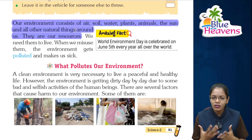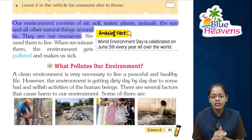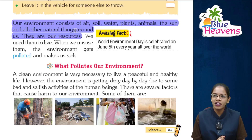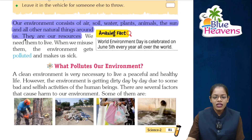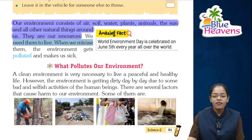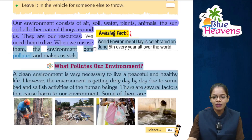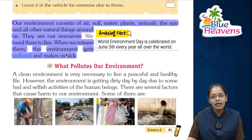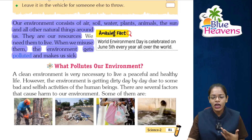बच्चों, हमारे environment में air यानी हवा, soil यानी मिट्टी, water यानी पानी, plants यानी पेड़-पौधे, animals यानी जानवर, और sun — ये सारे natural things होते हैं जो हमें प्रकृति से, God से मिले हैं। ये सारे हमारे resources हैं। हमें इनकी जरूरत होती है जिंदा रहने के लिए। अगर हम इनका misuse करते हैं तो हमारा environment pollute हो जाता है और हम sick हो जाते हैं।